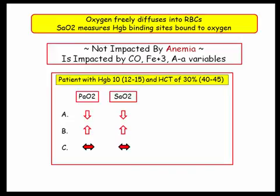Now we are back to our anemic patient. Based on the discussion, the oxygen saturation is not affected by the presence of anemia. It is affected by carbon monoxide, the ferric form of iron, and those cardiopulmonary variables which affect normal oxygenation.